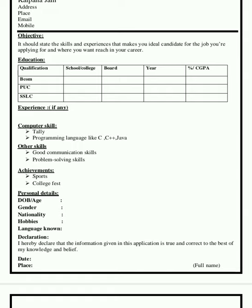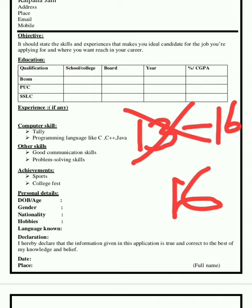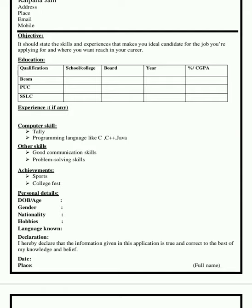The next section is educational qualification. Always mention your educational qualification in reverse chronological order. For example, for a BCom student, it would be BCom, then PUC, then SLC. Mention the school and college you studied at, the board, and the year of passing or duration. For example, if you completed BCom from 2013 to 2016, mention that, or just mention the year of passing — but do not mention both. Choose either one, and follow the same format for PUC and SLC.